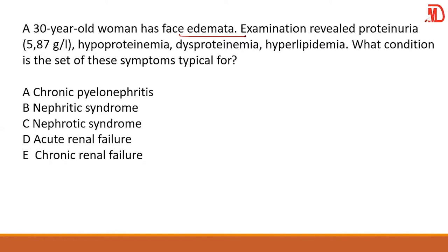Now let's look at what organ they are talking about. The examination revealed proteinuria, hypoproteinemia, dysproteinemia, and hyperlipidemia. This is nephrotic syndrome, because the triad for nephrotic syndrome includes proteinuria, hypoproteinemia or hypoalbuminemia, and edema or swelling — this is the triad for diagnosis of nephrotic syndrome.